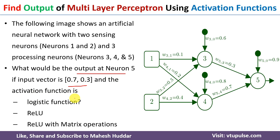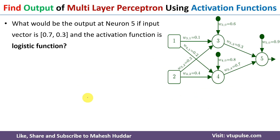The activation functions we need to use are the logistic function, ReLU, and ReLU with matrix operations. First, we will calculate the output using the logistic activation function. To calculate the output at the output layer neuron, we first need to propagate the input from the input layer to the hidden layer, and then from the hidden layer to the output layer. So first we will calculate the output at the hidden layer neurons.